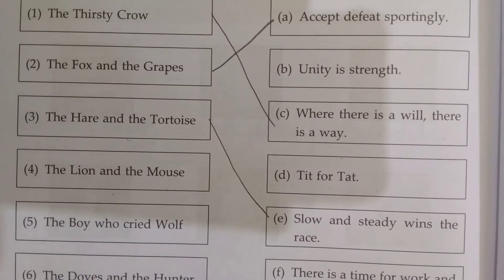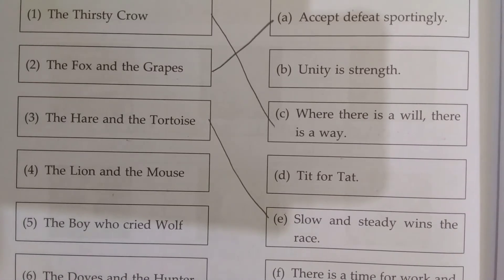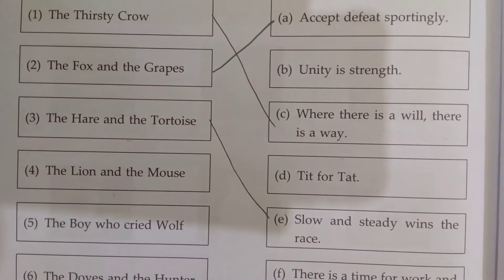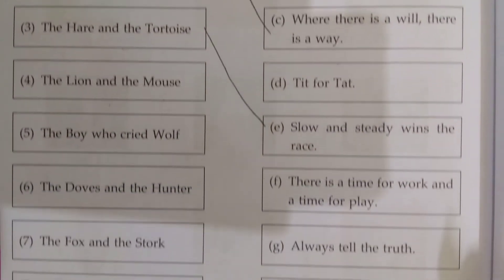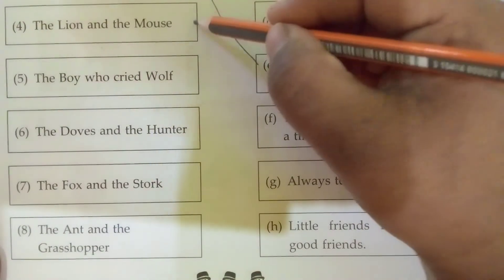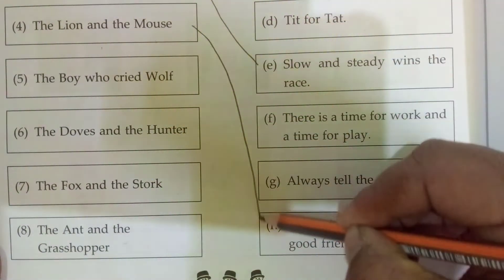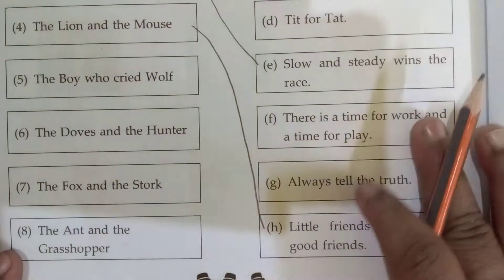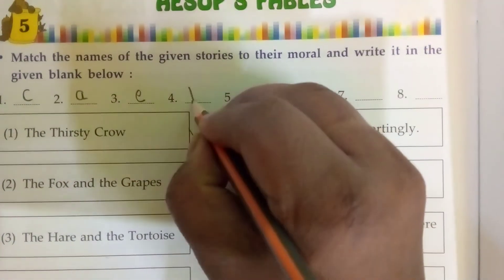Fourth, The Lion and the Mouse — the moral is 'Little friends may prove good friends.' Here we will write H.